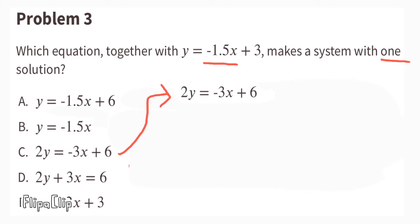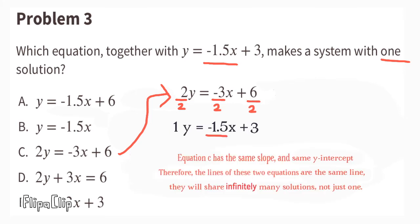Dividing all terms on both sides by 2, the equation reads y equals negative 1.5x plus 3. Equation C has the same slope and the same y-intercept — therefore the lines of these two equations are the same line. They will share infinitely many solutions, not just one.